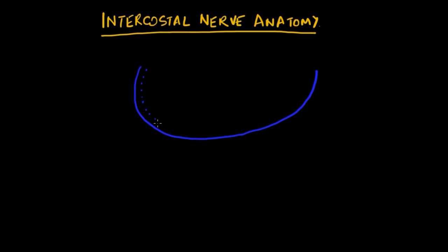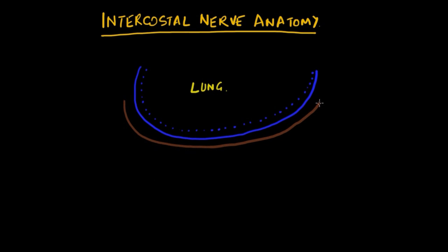The innermost structure around which the intercostal nerve is essentially wrapped is the lung. Here we are showing two layers of the pleura: the inner one, shown in dotted line, is the visceral layer of pleura, and the one shown in solid blue is the parietal layer of pleura. Outside the lung there are three muscles — the intercostal muscles lying in the intercostal space, attached to the under surface of the rib.